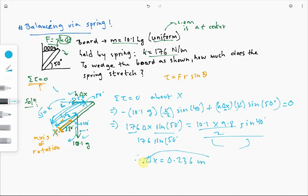So, what does this tell us? This tells us that if the extension of the spring is 0.236 meters, then this board is still in balance, and the torque on it is 0. So, the board remains at equilibrium for this extension of this particular spring. Alright? I hope this makes sense.